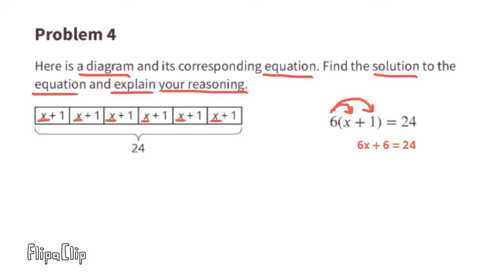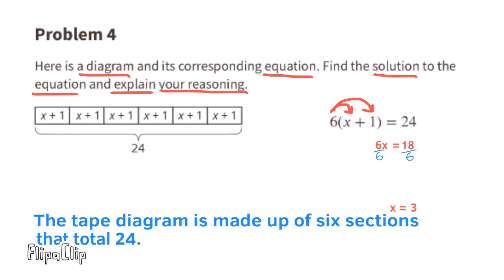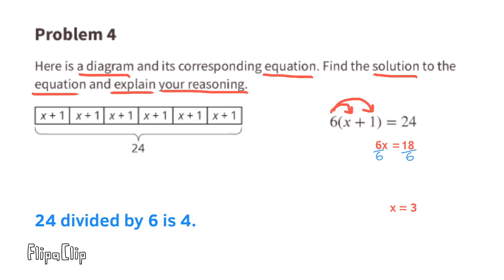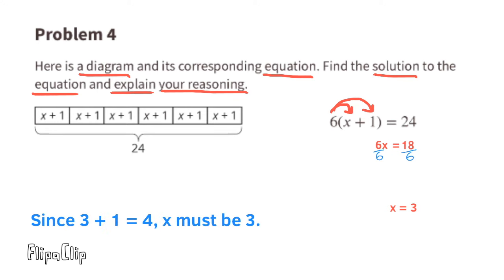To isolate x, subtract six from both sides: six x plus six minus six equals six x, and 24 minus six equals 18, so six x equals 18. Divide both sides by six: x equals three. Checking with the tape diagram: 24 divided by six sections equals four. Each section has value four, and since x plus one equals four, three plus one equals four confirms x equals three.